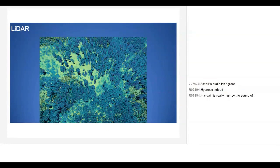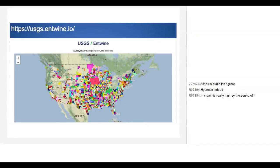The question is where do we get this? The USGS publishes it on the entwine point cloud endpoint. Each of the colored polygons on the map is a different project — places where they've flown and collected LiDAR data.